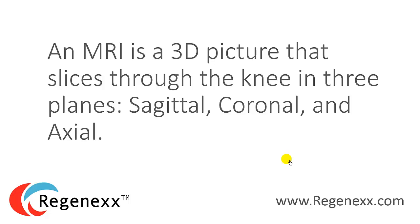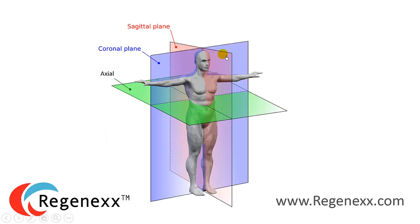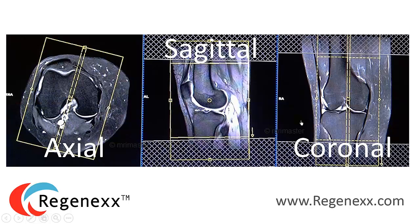An MRI is a 3D picture that comes in three planes: sagittal, coronal, and axial. The coronal is a front-back plane, the sagittal is a side plane, and the axial is a looking-from-the-top or looking-from-the-bottom plane. On your knee MRI image, the axial images will look like this, the sagittal images like this — a side view — and the coronal, again, a front view.